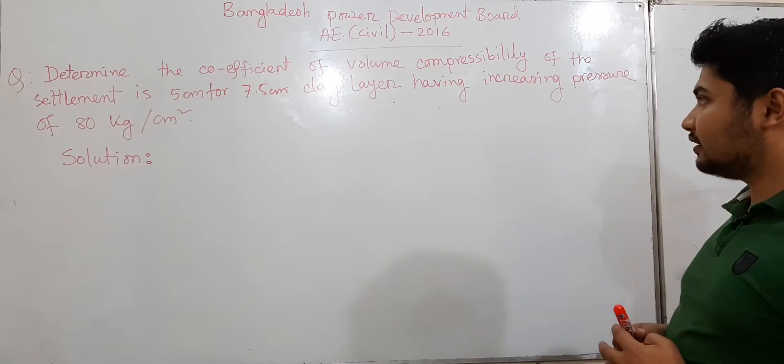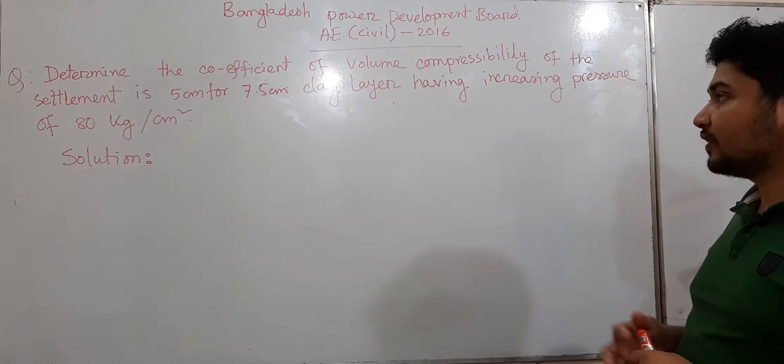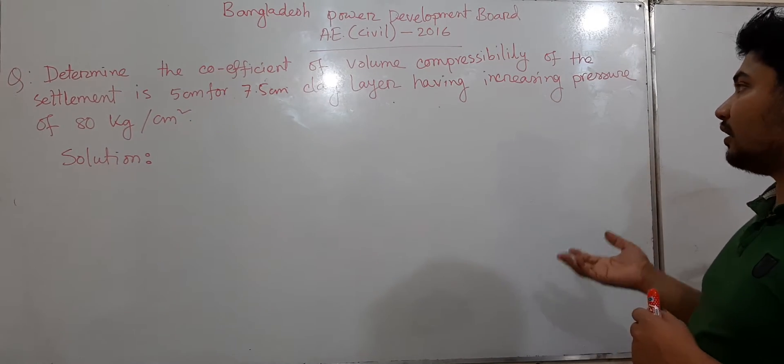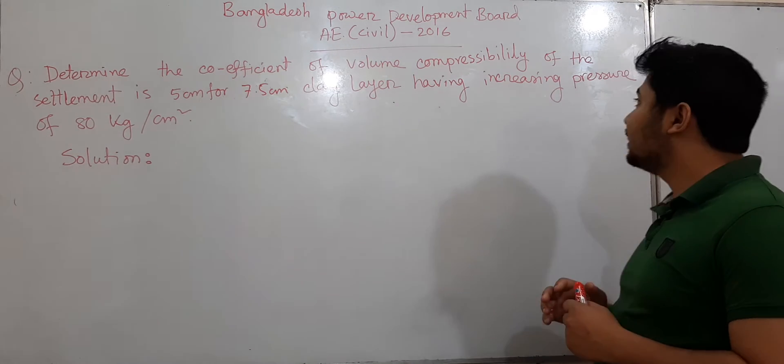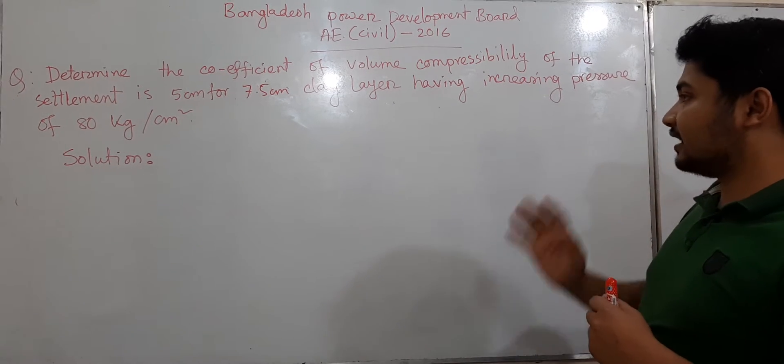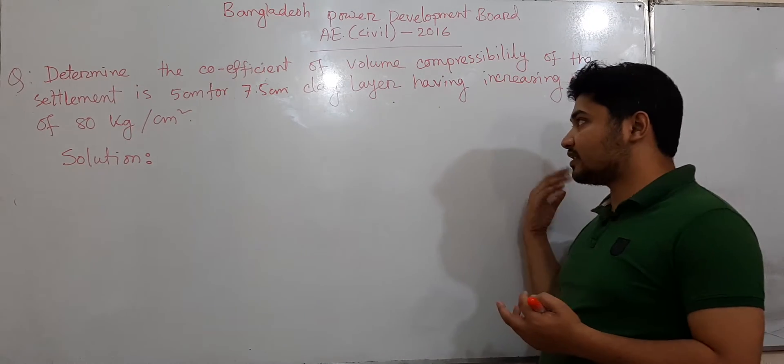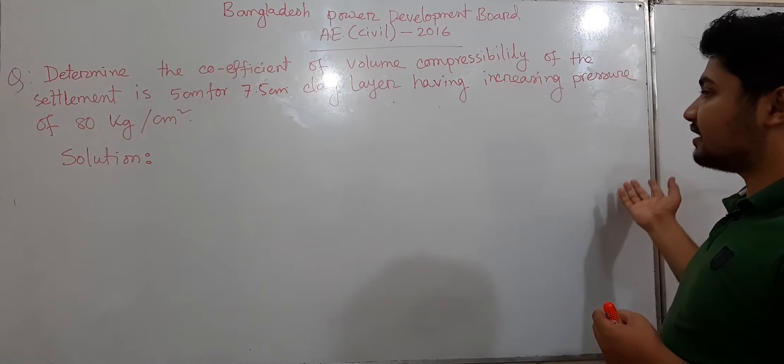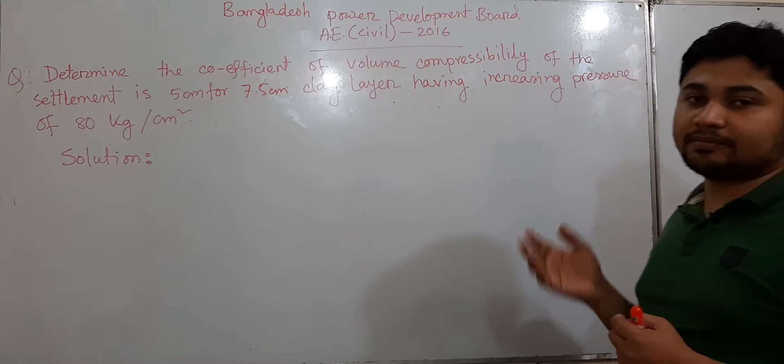The question is: Determine the coefficient of volume compressibility if the settlement is 5 cm for a 7.5 cm clay layer having an increasing pressure of 80 kg per cm².